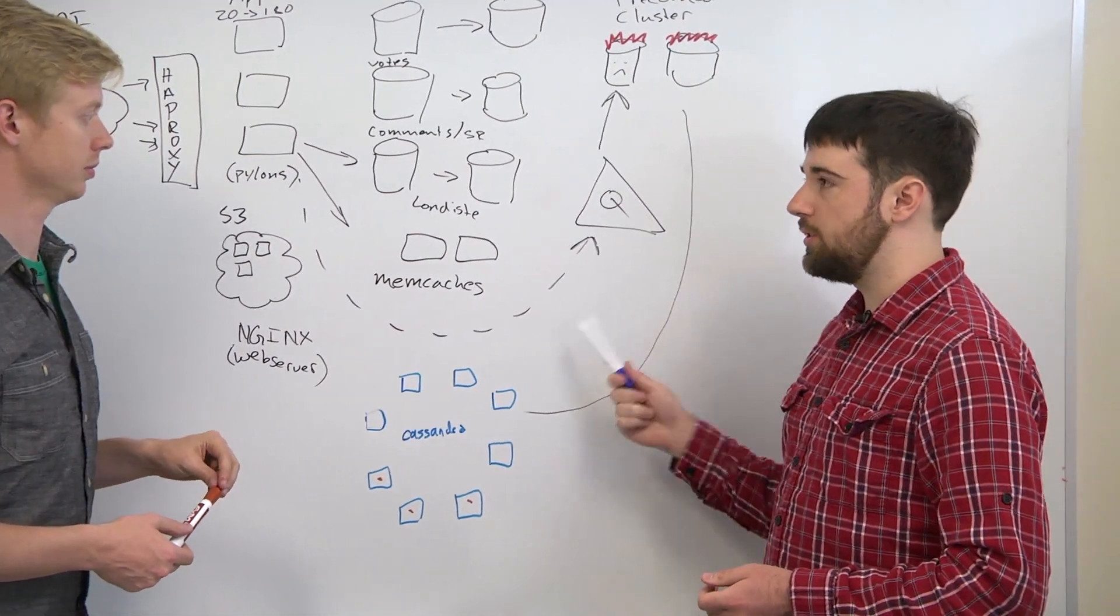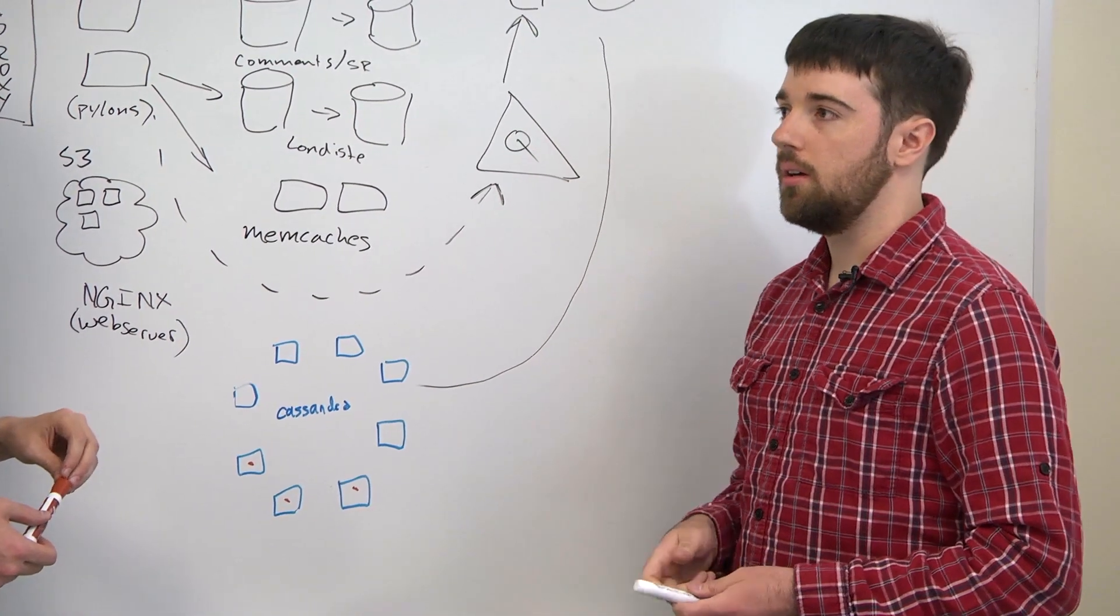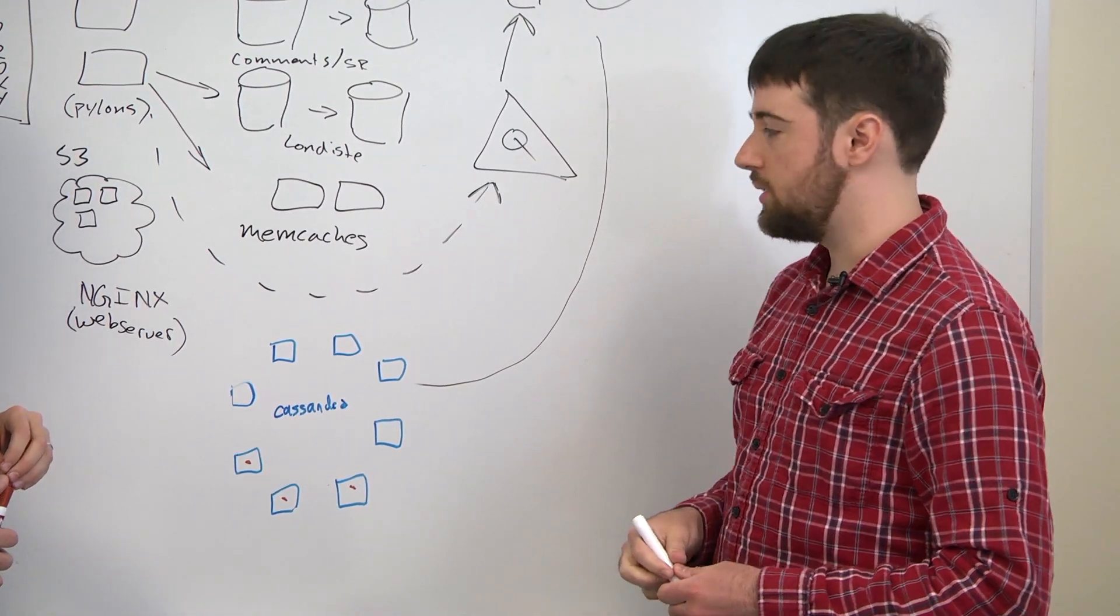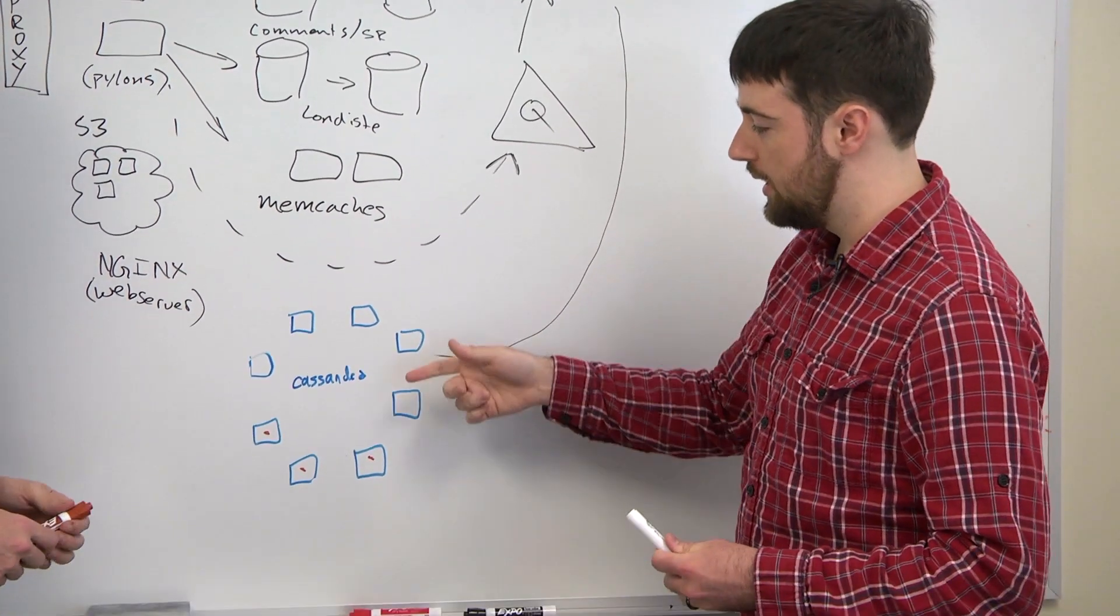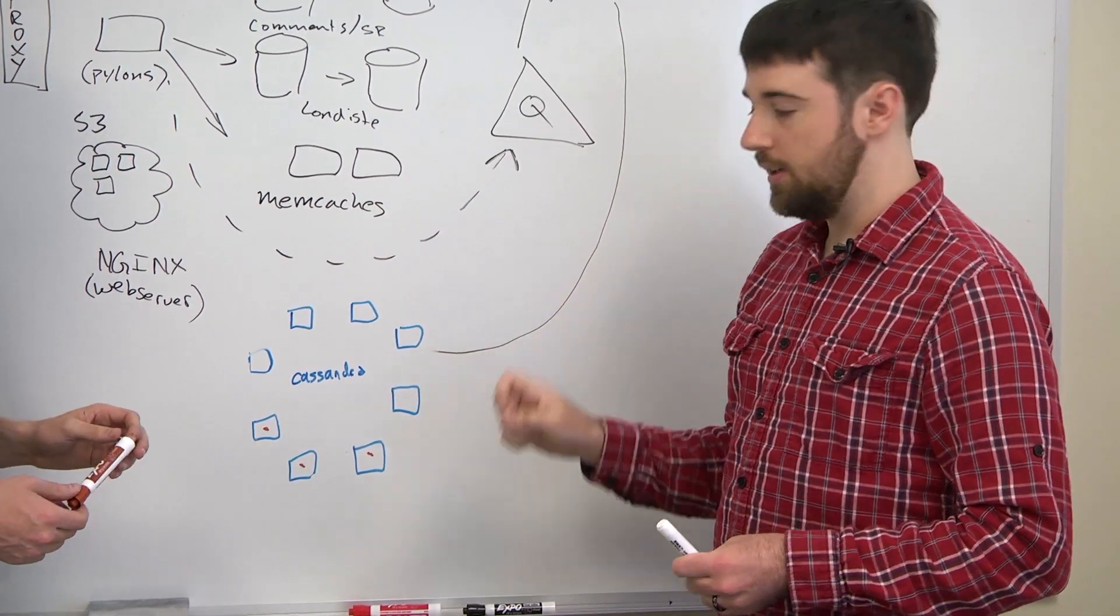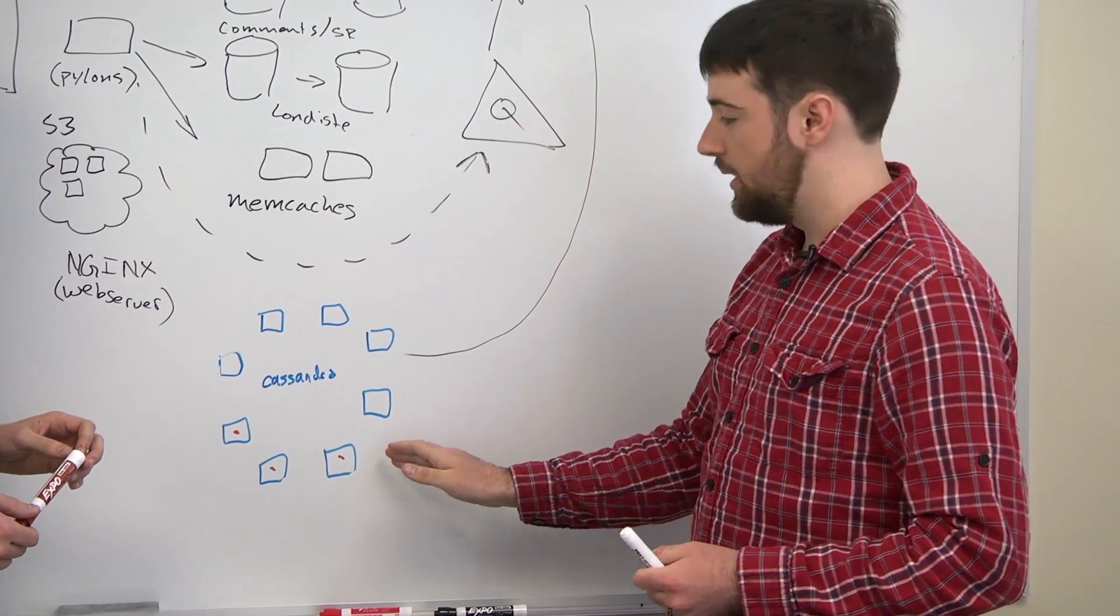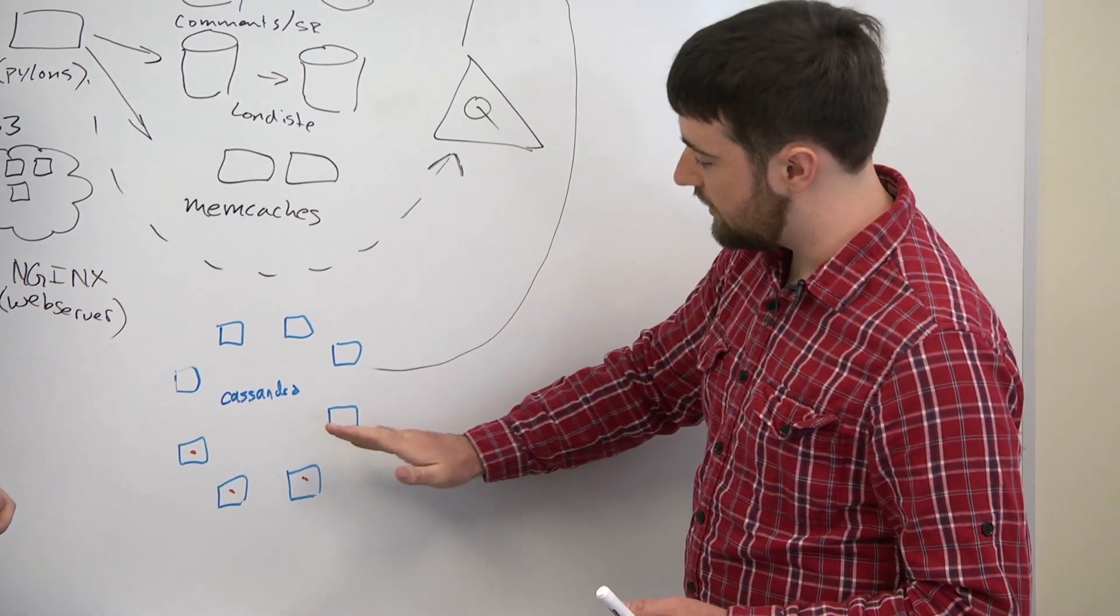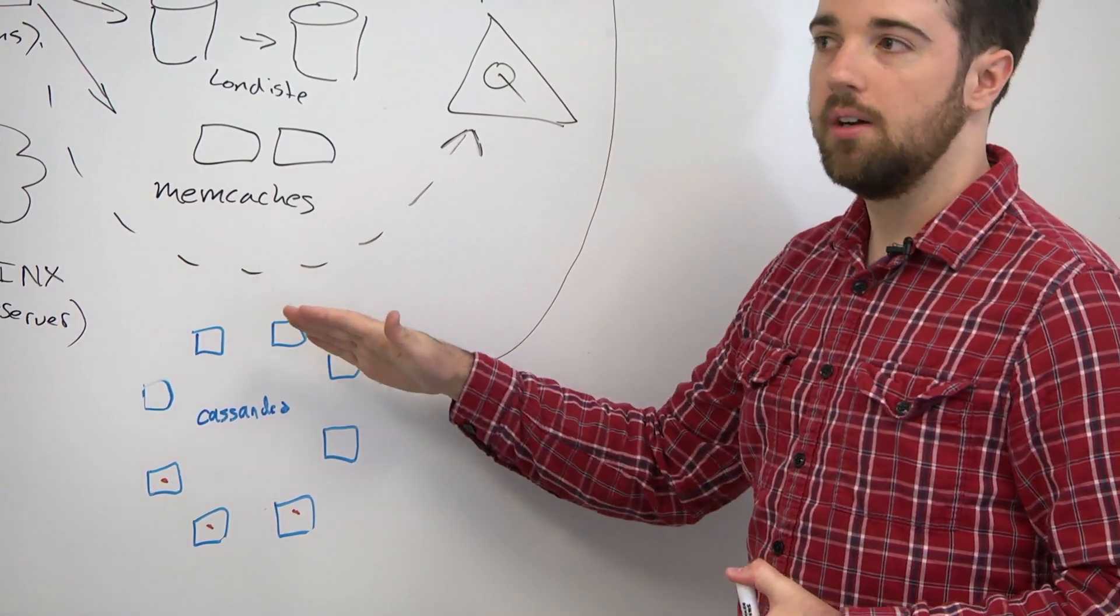So yeah, that modulo hashing—we are using consistent hashing now. The way that works is it basically builds up a ring. Instead of mapping keys one through one thousand to this box, it actually assigns them to a place on a circle and finds the nearest server on that circle.